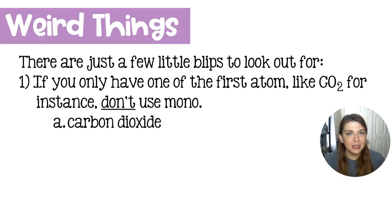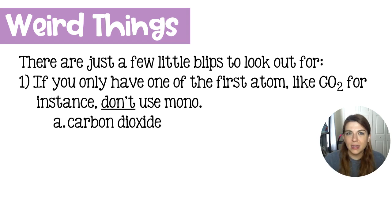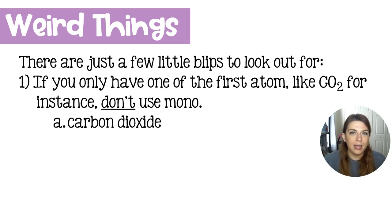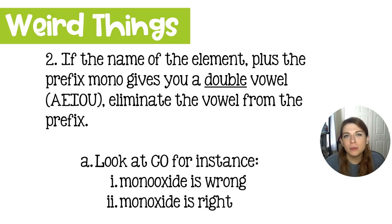Now I know I said it was super easy, but there are just a few things to look out for. If you have a compound like carbon dioxide, CO2, and you only have one atom of the first element, we're not going to use the prefix 'mono' — we're just going to name the element. It's similar to how we don't write a subscript of one when we have just one atom. So we're not going to write 'monocarbon dioxide'; just saying 'carbon dioxide' indicates there's one carbon.